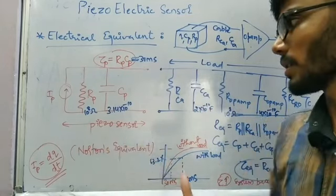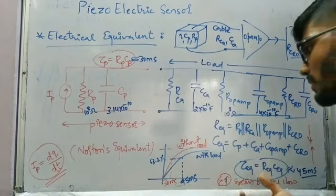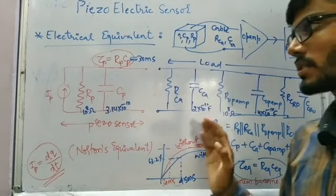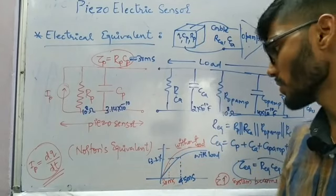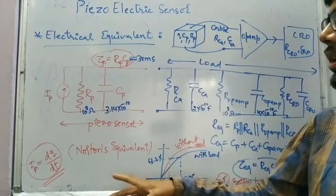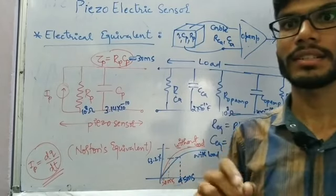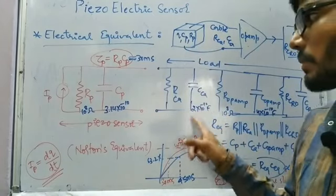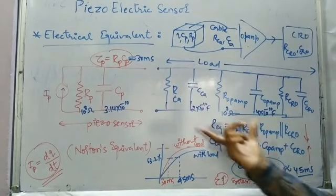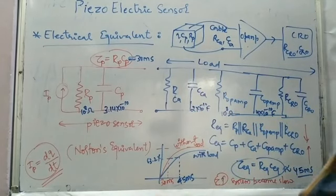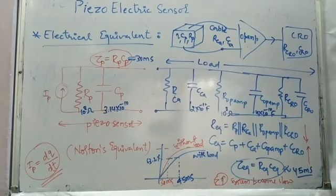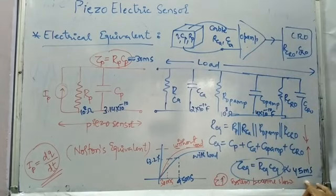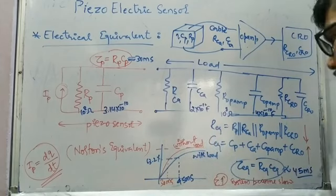We are connecting the piezo sensor using a cable, not lead wires — with lead wires, resistance and capacitance come in series, whereas with cable they come in parallel. The new equivalent time constant is τ_eq = R_eq × C_eq. Using the given values, the output time constant with load comes out as approximately 45 milliseconds.